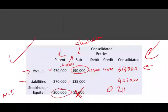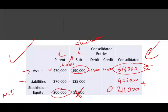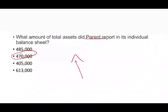So consolidated stockholders' equity is $211,000. You can always double-check: total assets of $616,000 equals liabilities plus owners' equity of $616,000. The balance sheet balances.